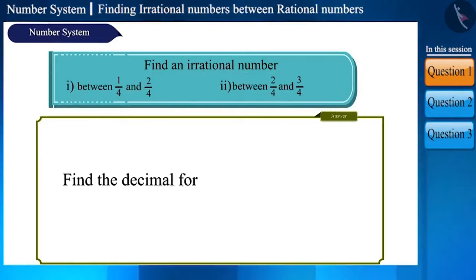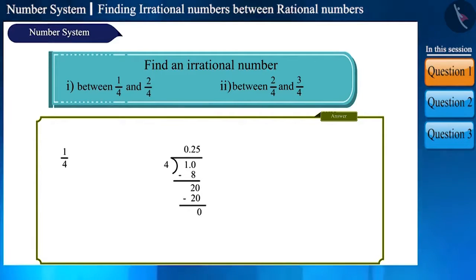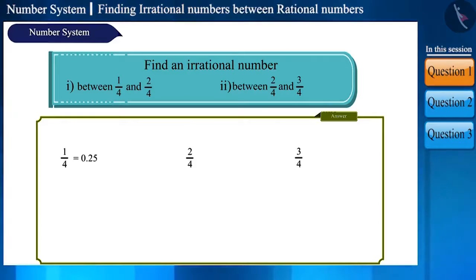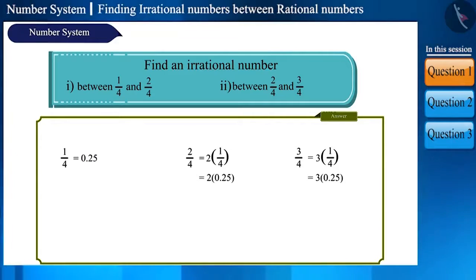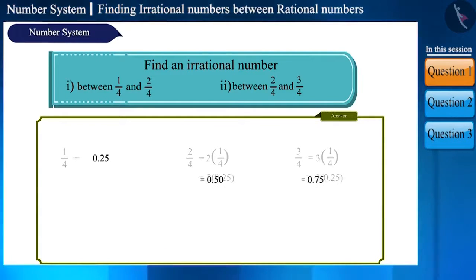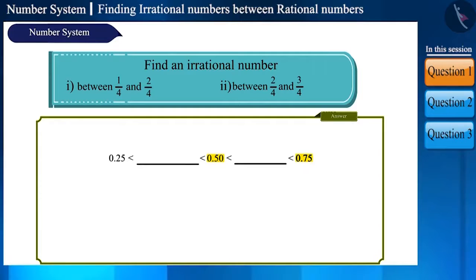What to do first? We will first find their decimal forms by the division method. By solving 1 by 4 we get 0.25. Now, 2 by 4 and 3 by 4 can also be written as 2 times 1 by 4 and 3 times 1 by 4 — that is, by multiplying the decimal form of 1 by 4, which is 0.25, we get 0.50 and 0.75. We have to find one irrational number between 0.25 and 0.50, and one between 0.50 and 0.75.